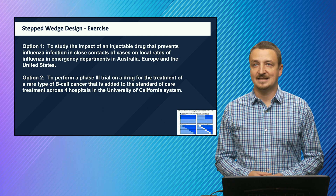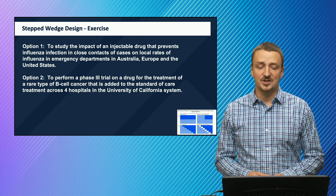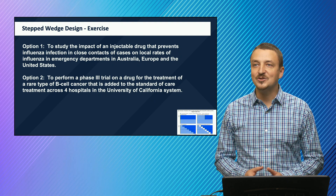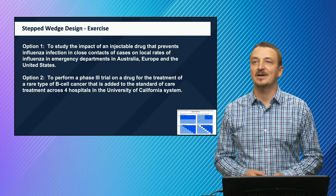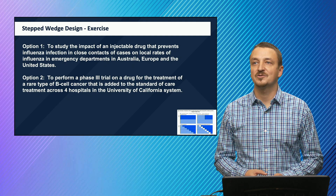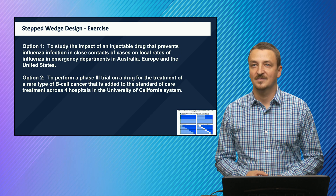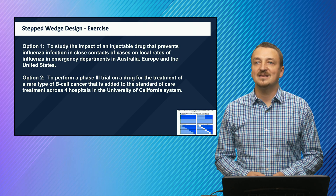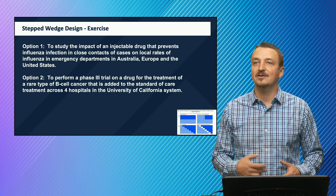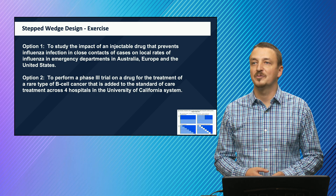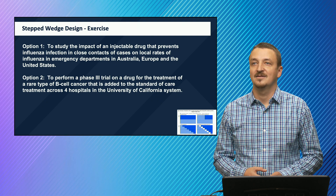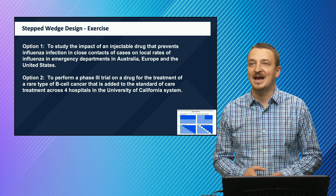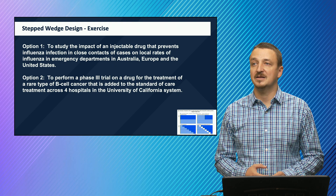Here are the two options for the exercise. Option one is to study the impact of an injectable drug that prevents influenza infection in close contacts of cases on local rates of influenza in emergency departments in Australia, Europe, and the United States. Option two is to perform a phase three trial on a drug for treatment of a rare type B-cell cancer added to standard of care across four hospitals in the University of California system.